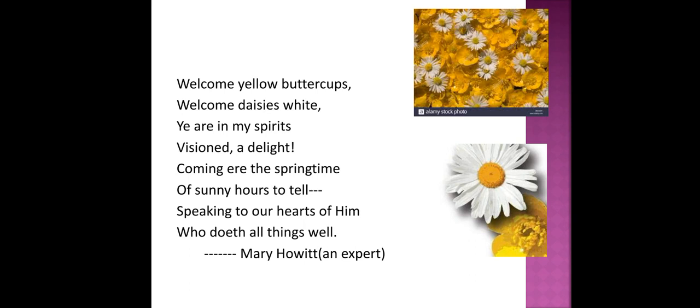In the next stanza: welcome yellow buttercups. Buttercups are which color? Yellow color. So the poet welcomes the buttercups. Welcome daisies white — the daisy is white. So the poet also welcomes the daisies. These are in my spirit's vision, delight. Imagine, the flowers are so beautiful.